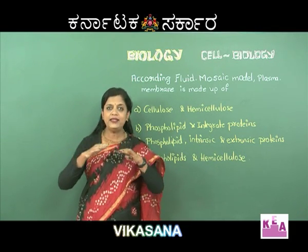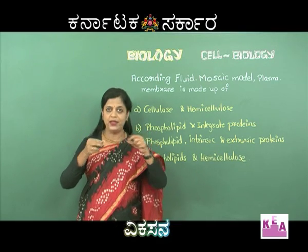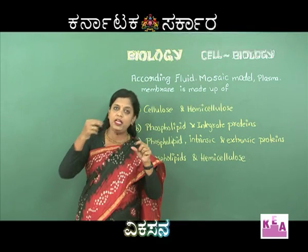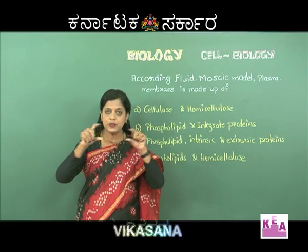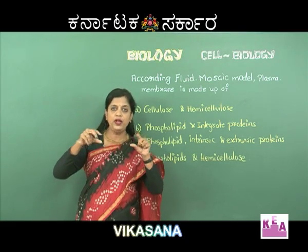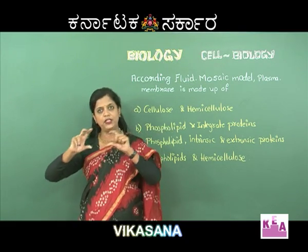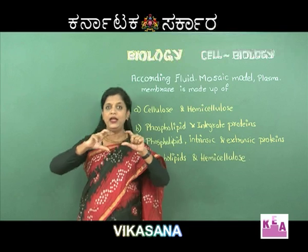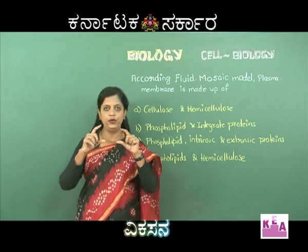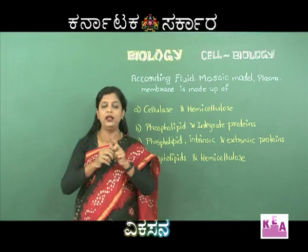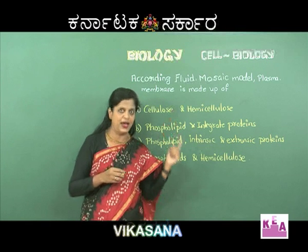What is fluid mosaic? It is having a lipid bilayer - there are two layers of lipids. In between, there is protein. This protein will change its position; it is able to shift from one side to the other, giving a mosaic pattern. That's why it is called the fluid mosaic model. What chemicals do you have to answer?